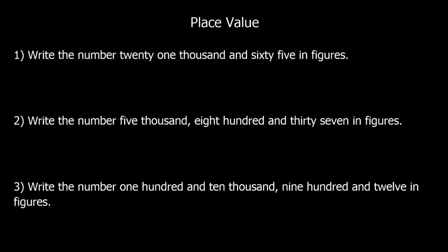We've got 3 questions here — press pause, have a go, and then press play when you're ready for the answers. Question 1: write the number 21,065 in figures. 21,000 means we've got 2 in the ten-thousands column and 1 in the thousands column. And we've got 60, so 6 in the tens column, and 5. So the answer is 21,065.